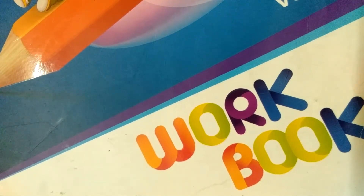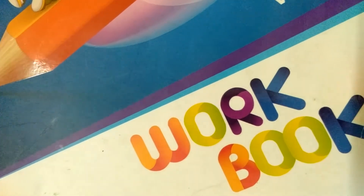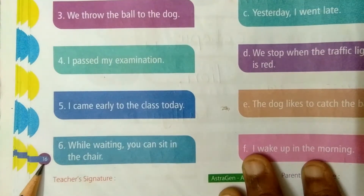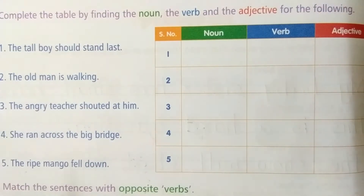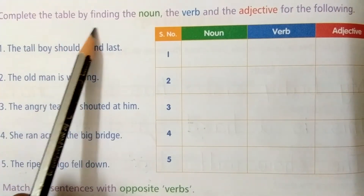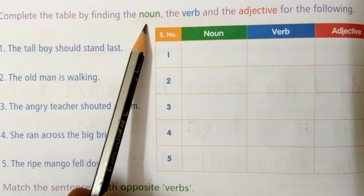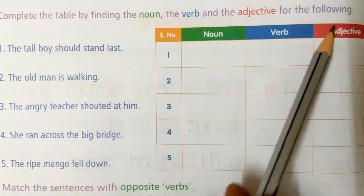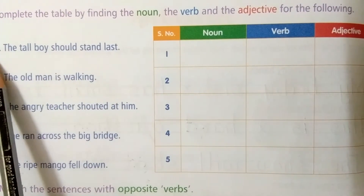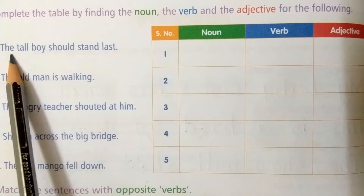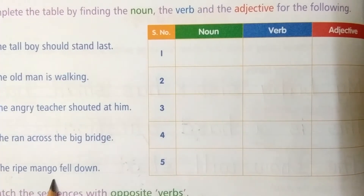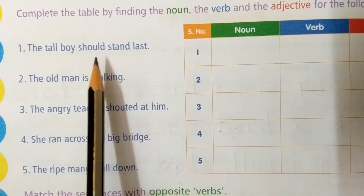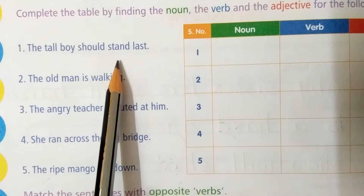Good morning, children. Take your word book and open page number 16. See here — complete the table by finding the noun, the verb, and the adjective for the following sentences. In each sentence, we have to find out the noun, verb, and adjective.